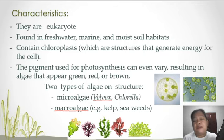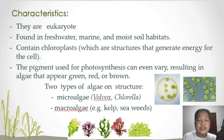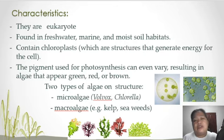For the unicellular type, we have volvox, chlorella, and euglena as representatives.